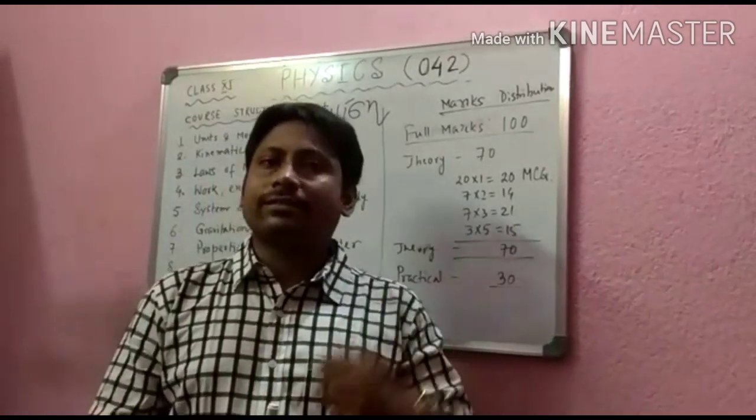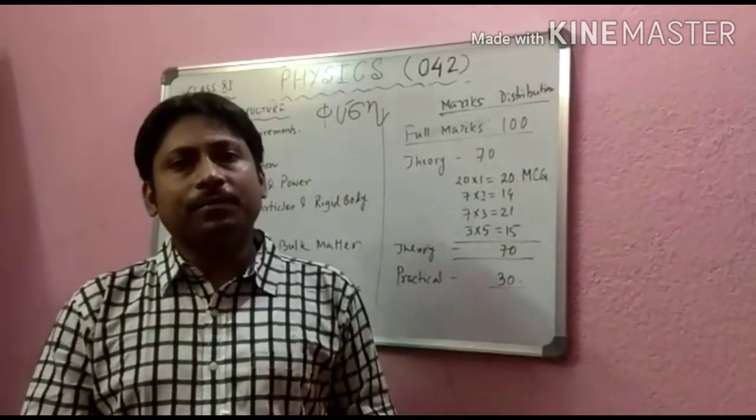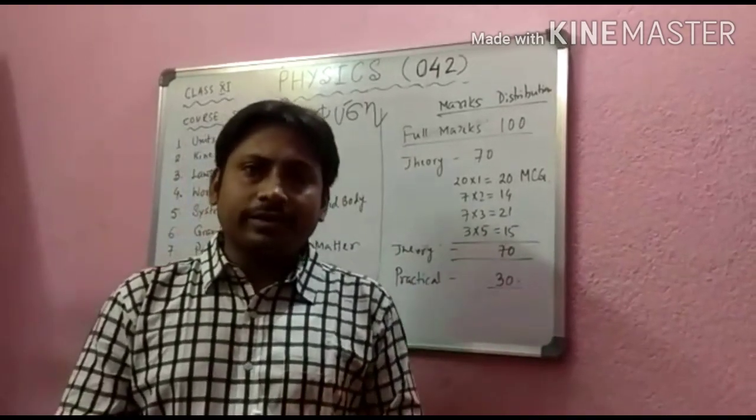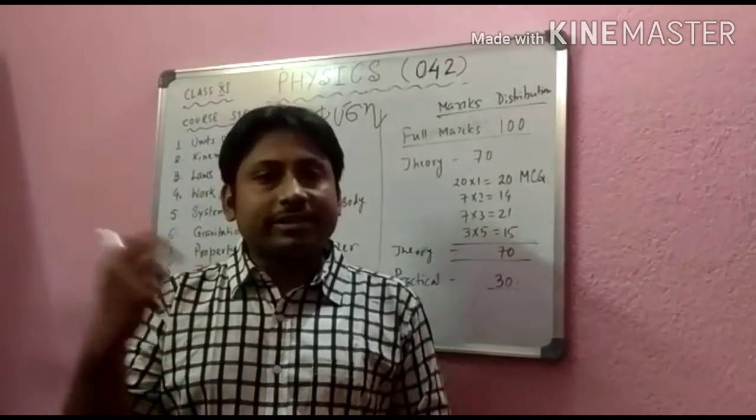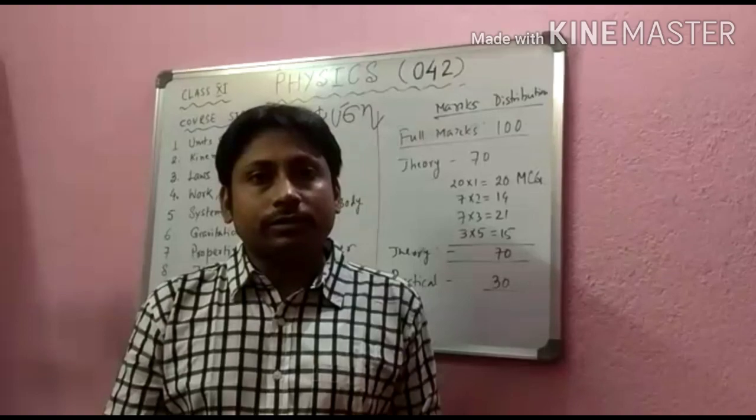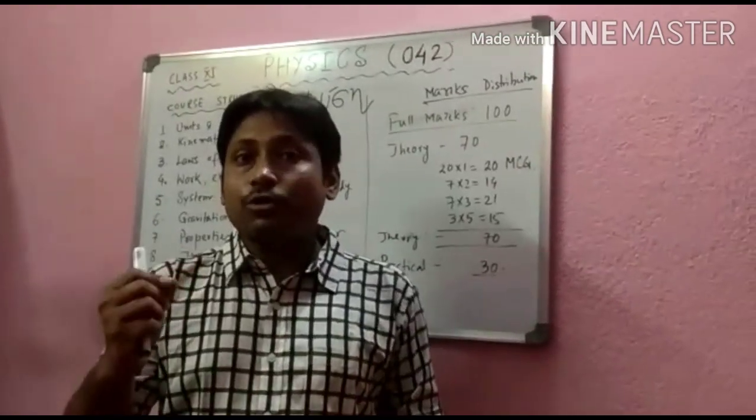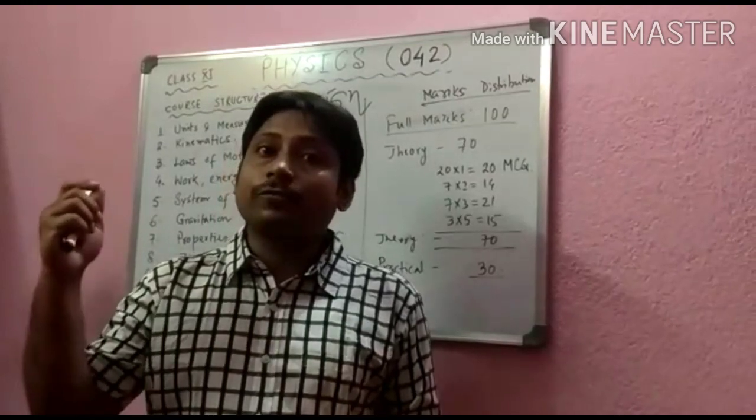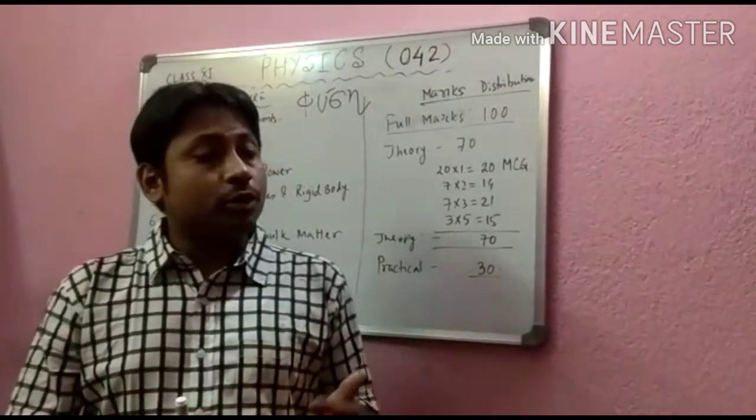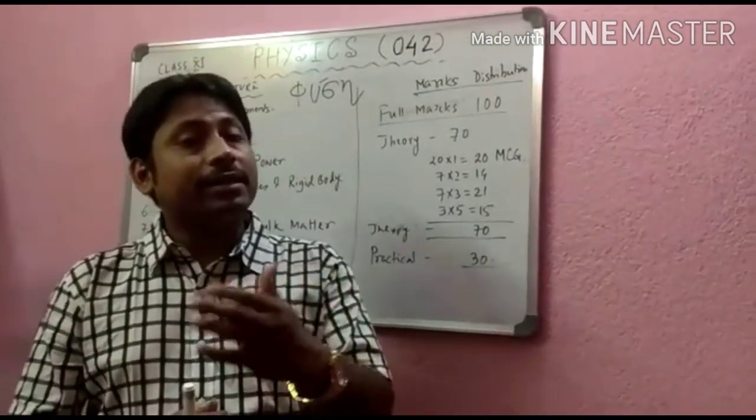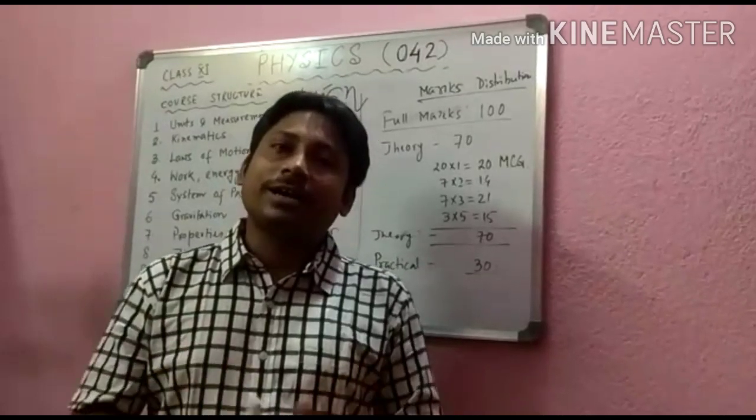Range of length like 10 to the power minus 15, the size of the nucleus, to 10 to the power 26, the size of the universe. Masses range from 10 to the power minus 31, the mass of electron, to 10 to the power plus 30, the mass of the Sun.